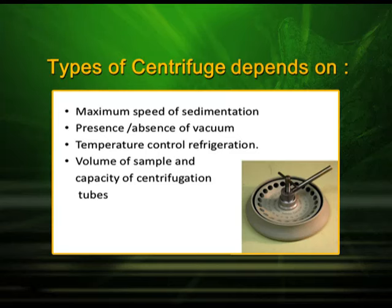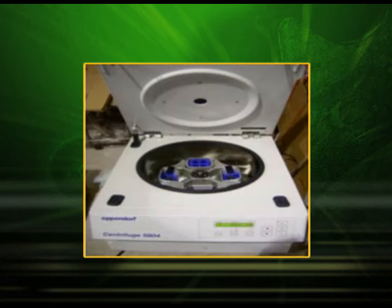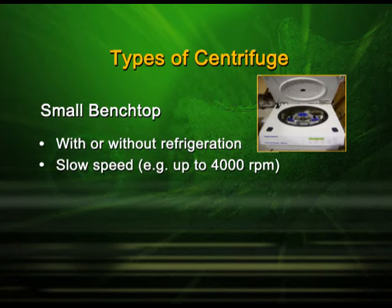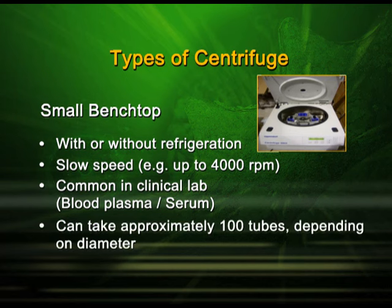For example, you might have a sample of around 1.5 microliters or around 100 ml — so it depends upon the volume. The first type is the small bench top or low speed centrifuge. It looks something like a grinder, it can be with or without a refrigerator, runs at a very slow speed up to 4000 RPM, and is mostly used in clinics for separating blood plasma or serum. It can take approximately 100 tubes depending on diameter.